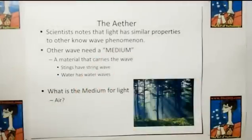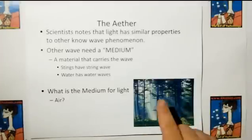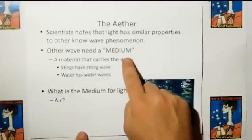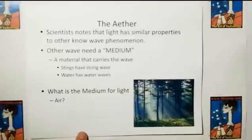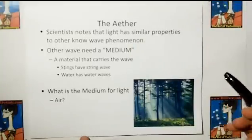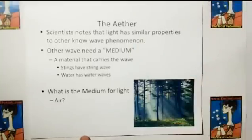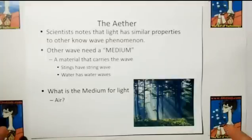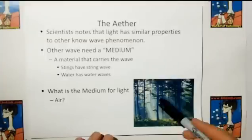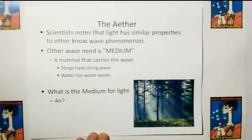Scientists noted that light has similar properties to other known wave phenomena, like water waves. Water waves travel over water, string waves travel over a string, sound waves travel through the air. They have a medium — a medium that allows the waves to be conveyed — because without water, you can't have water waves, and without air, you can't have air waves.